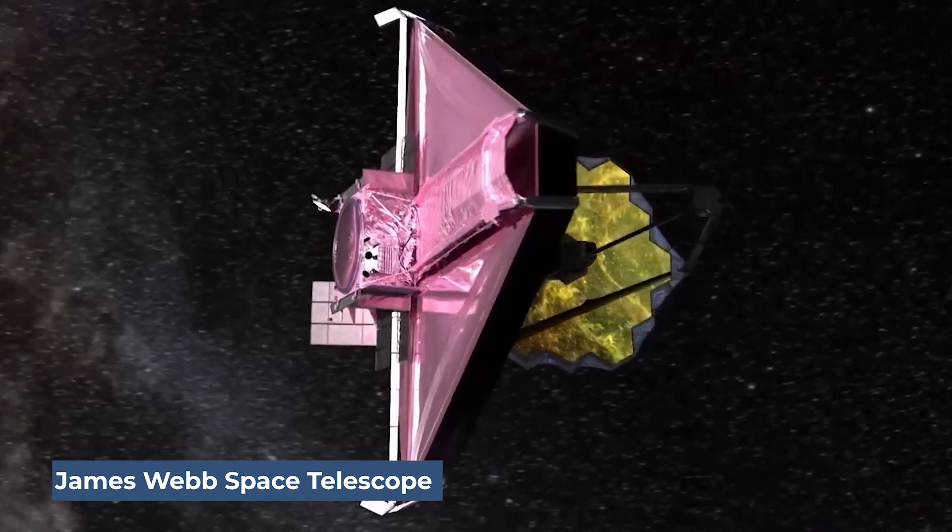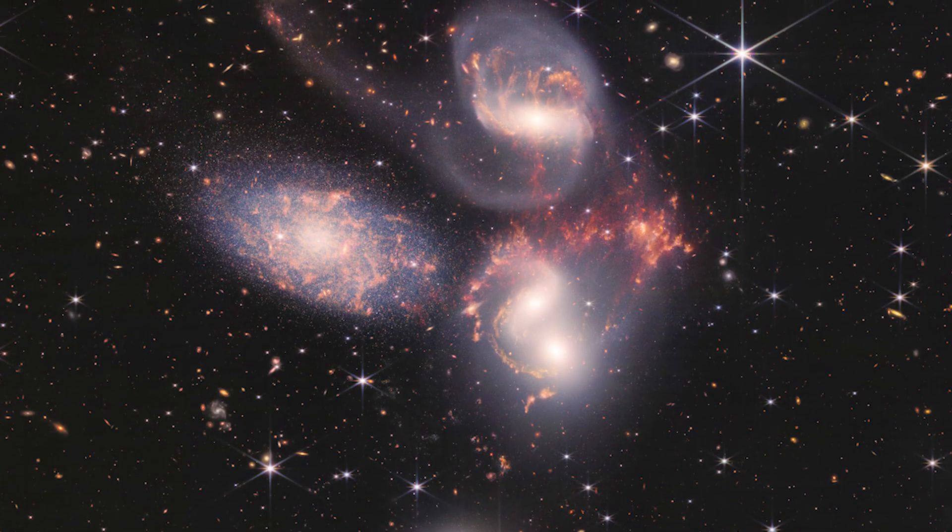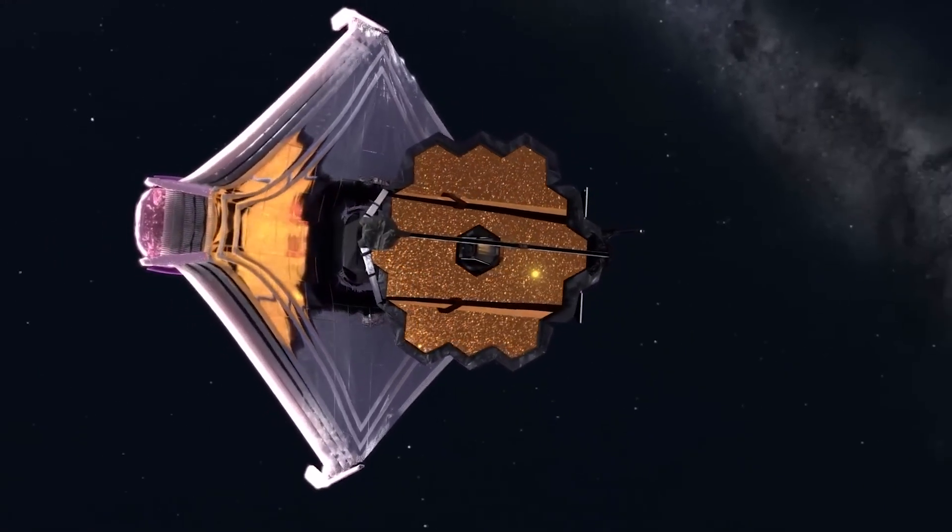NASA's James Webb Space Telescope has revealed several amazing images from a black hole that helped give us a totally new understanding of it. So, what did JWST see inside the black hole?